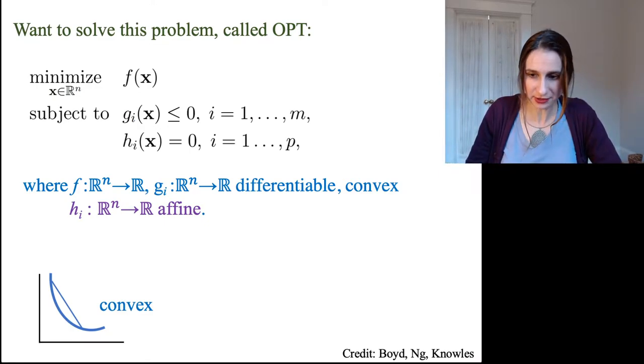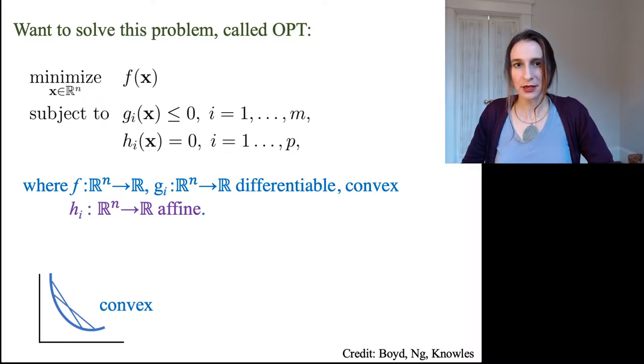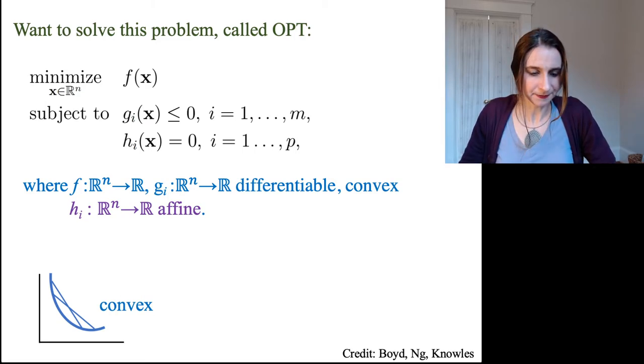Okay, but if the function is convex, then no matter where these two people stand on the function, there's a line connecting them that doesn't intersect the function. Okay, so that's convex.